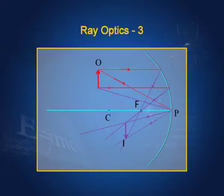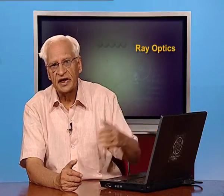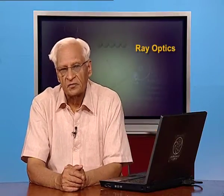In this lecture, we shall distinguish between convex mirror and concave mirror. If the reflecting side is inside, then it is a concave mirror. If the reflecting surface is outside, then it is known as a convex mirror. We shall first take the concave mirror.